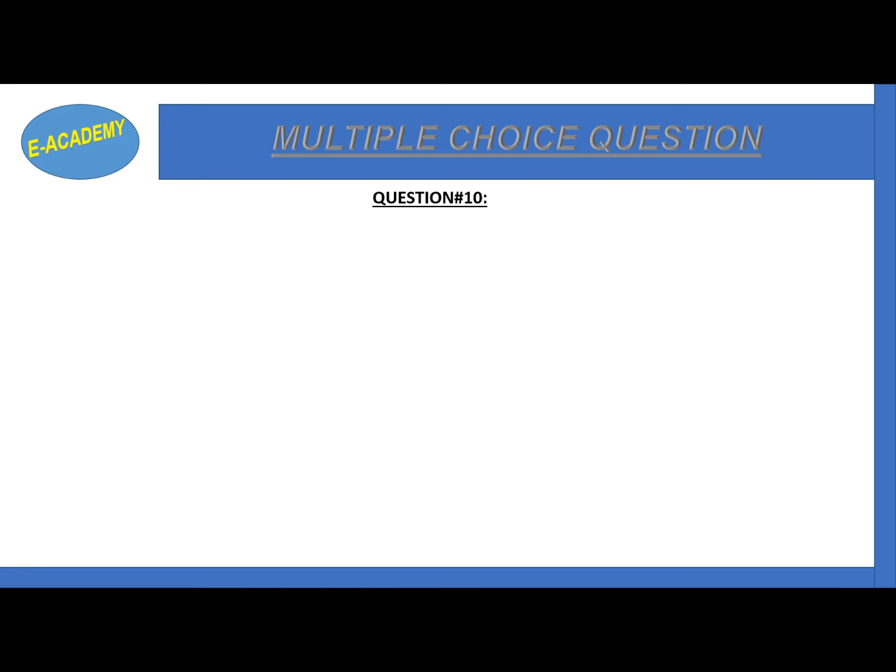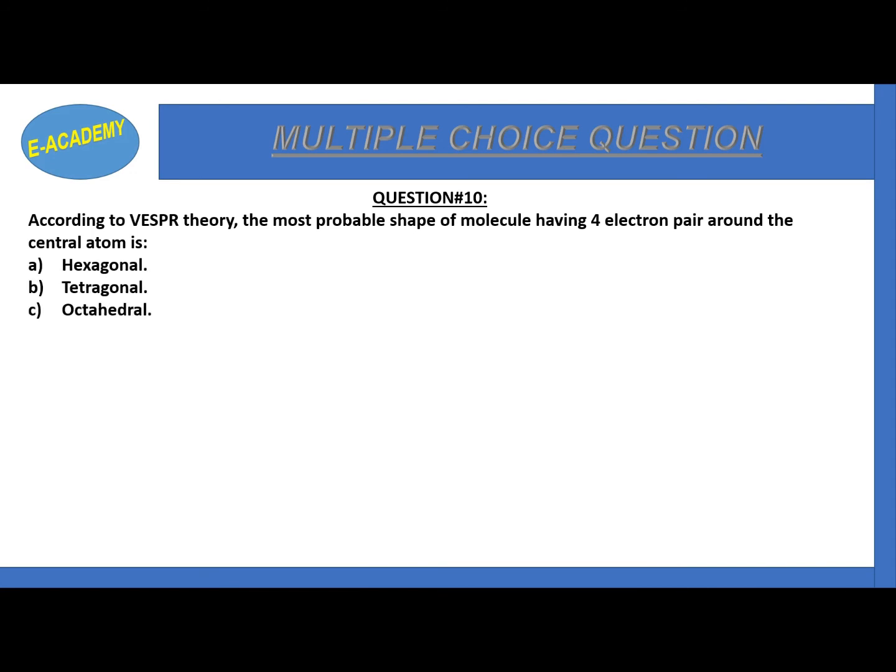Now question number 10. According to VSEPR (valence shell electron pair repulsion), the probable shape of molecule having 4 electron pairs around the central atom is hexagonal, tetrahedral, octahedral, or linear. When there are four electron pairs around the central atom, the molecule shape is tetrahedral. The correct option is B.